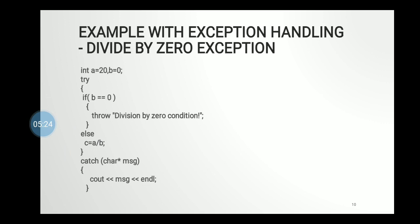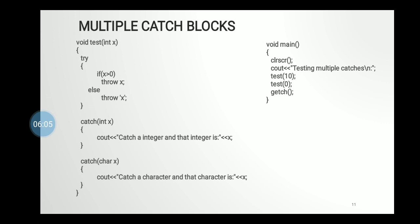Here is an example where we handle the divide-by-zero exception using the exception handling mechanism. Inside the try block, if the value of b equals zero, we throw the exception using the throw keyword; otherwise, the else part of the program executes normally. One try block can also have multiple catch blocks to handle any number of exceptions that may occur within that single try block.